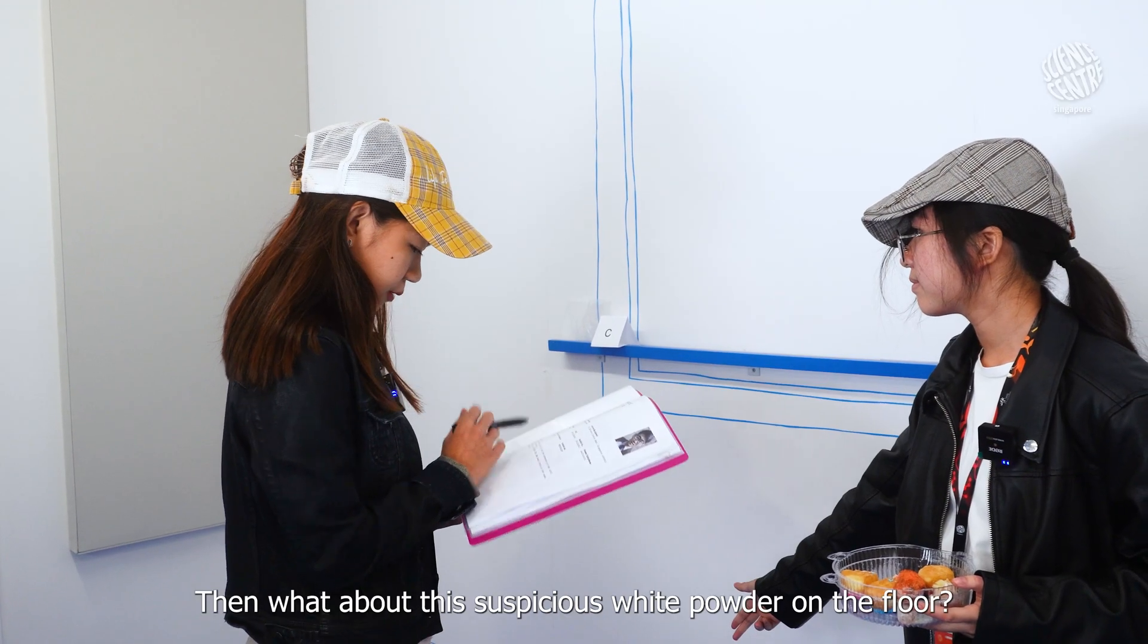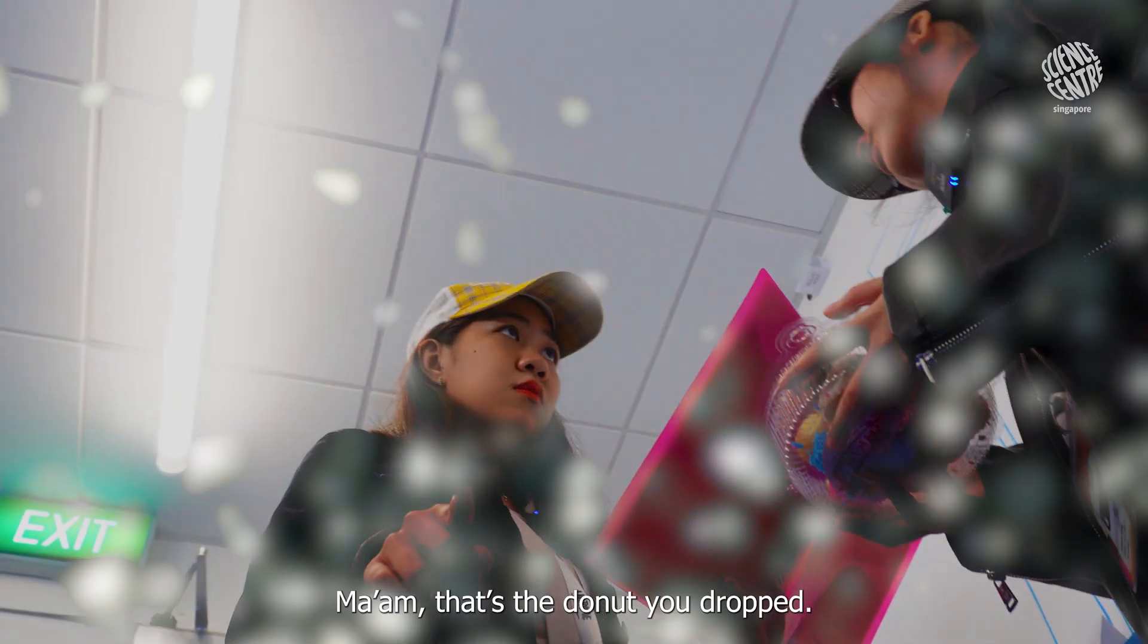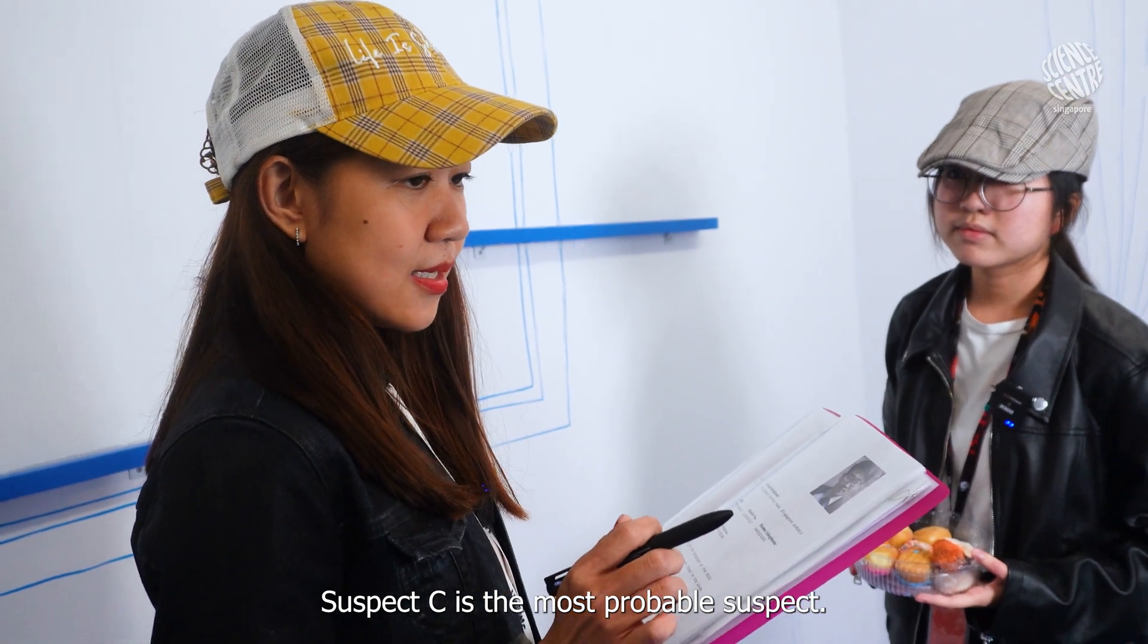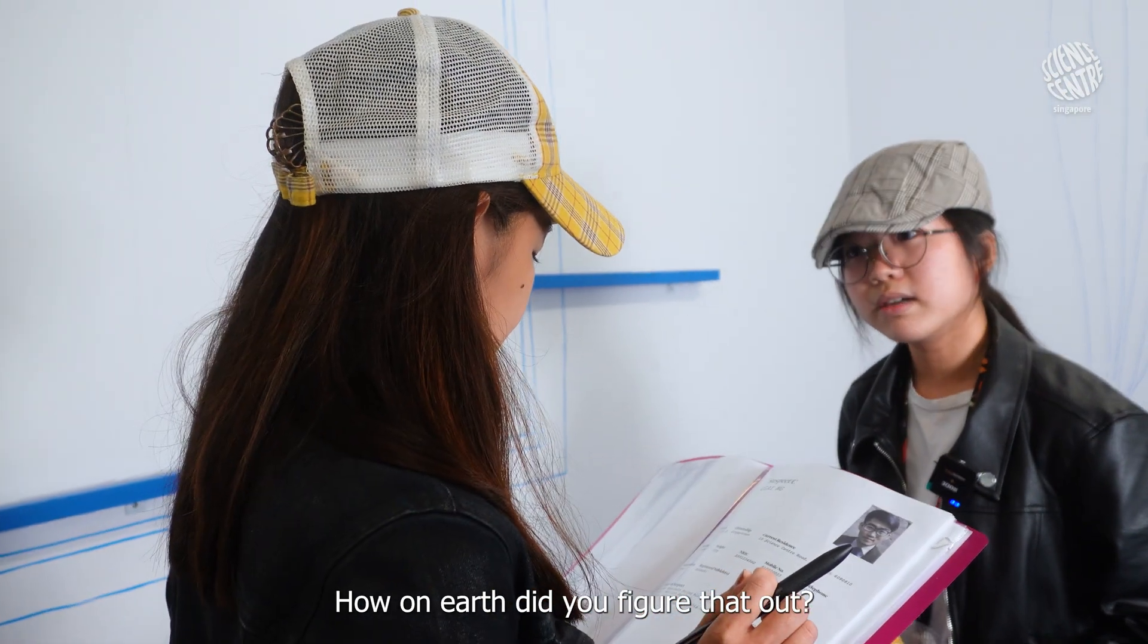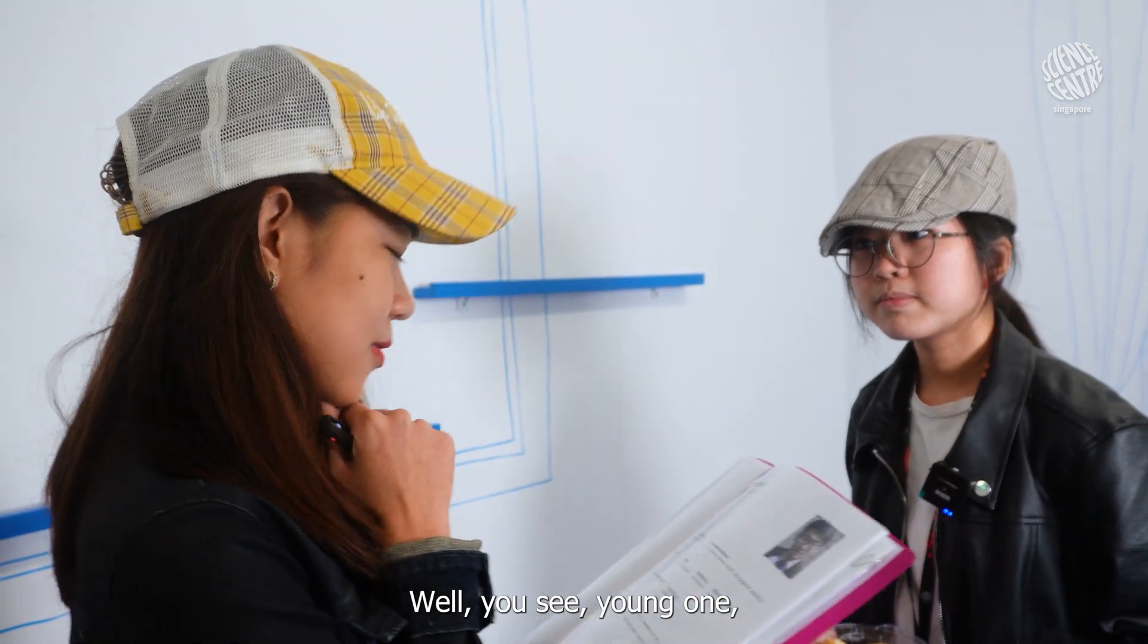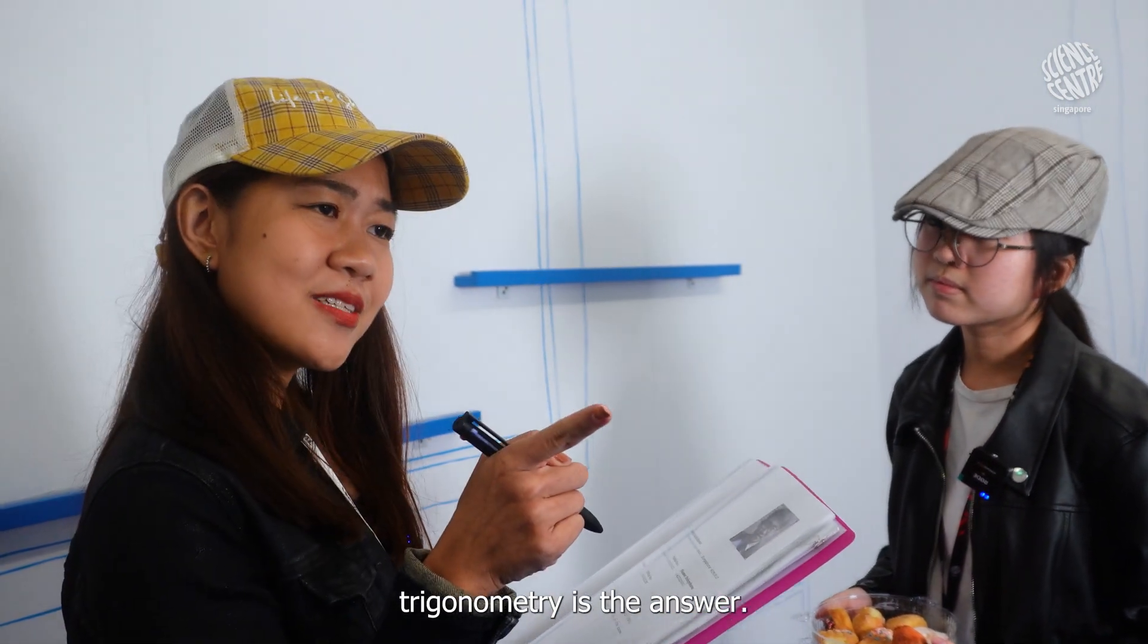Then what about these suspicious white photos? Suspect C is the most probable suspect. How on earth did you figure that out? Well, you see young one, trigonometry is the answer.